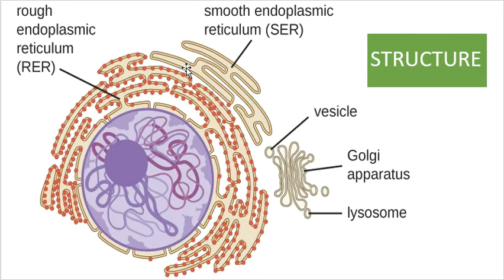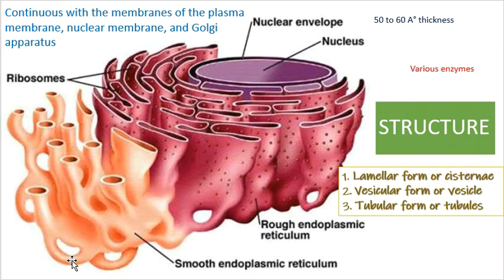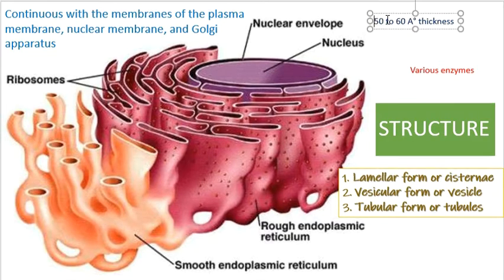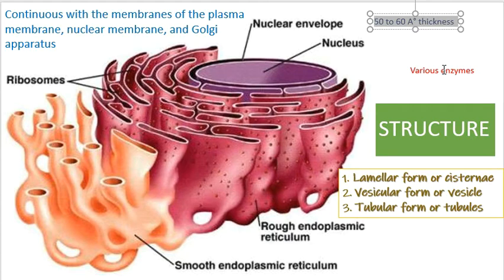The endoplasmic reticulum acts as a secretory, storage, circulatory and nervous system for the cell, so it has multiple roles. It is also the site of biogenesis of cellular membranes. The membranes of the endoplasmic reticulum are around 50 to 60 angstroms in thickness and are fluid mosaic — almost like the plasma membrane itself, as they secrete out plasma membranes as one of their functions.